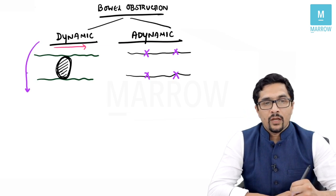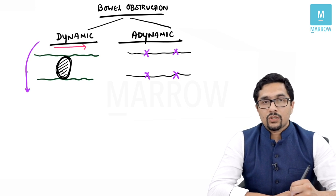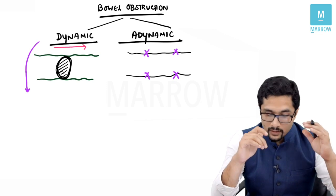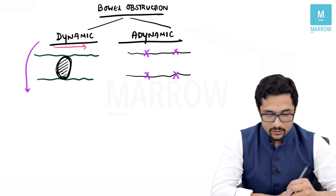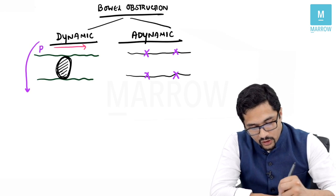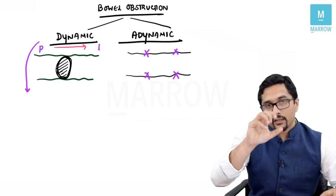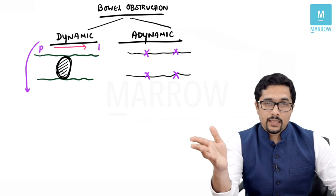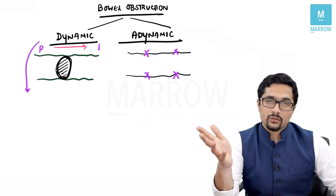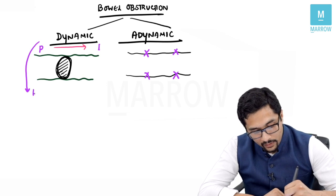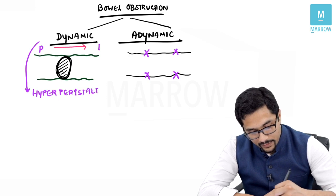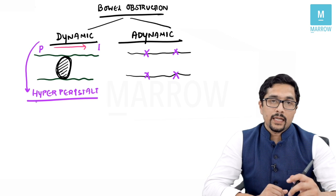Going back to the first situation — when you are stuck in a traffic jam, the thing you do is blow the horn. You blow the horn and you want the car in front of you to move. The same thing happens in dynamic obstruction. In dynamic obstruction, the proximal bowel contracts vigorously to overcome the obstruction. So you have hyperperistaltic bowel sounds in dynamic obstruction.